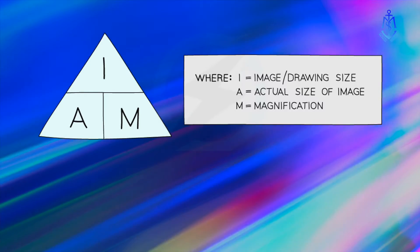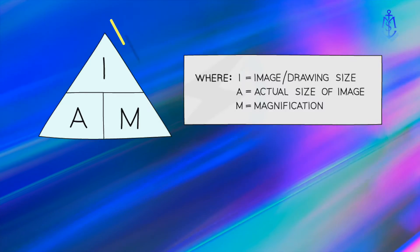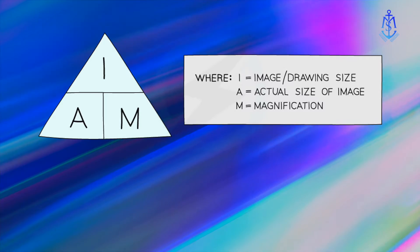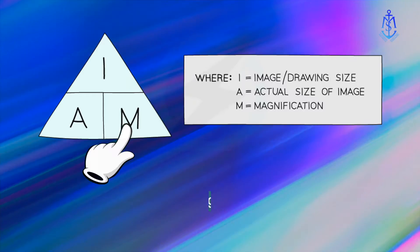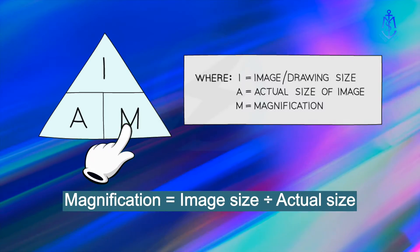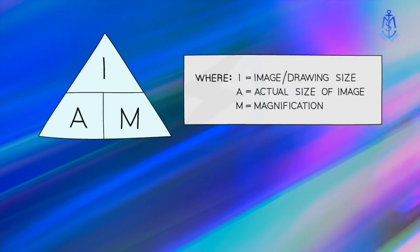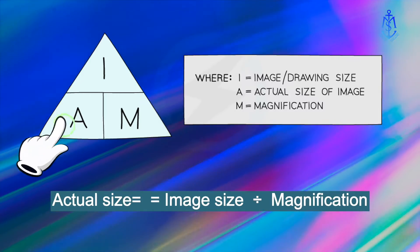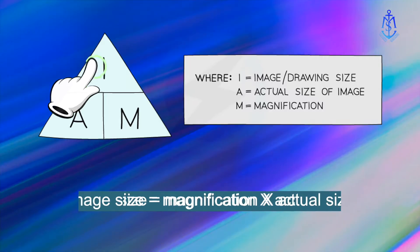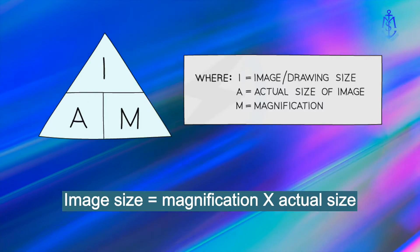Rearranging the equation to find things other than the magnification becomes easy when you remember the triangle. Whatever you are trying to find, place your finger over it and whatever is left is what you do. So magnification equals image size by actual size. Actual size equals image size by magnification. Image size equals magnification times actual size.